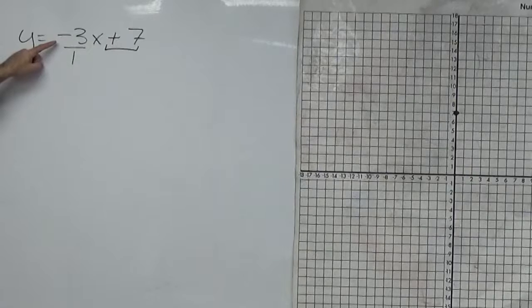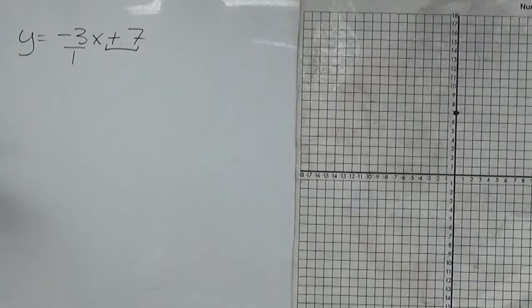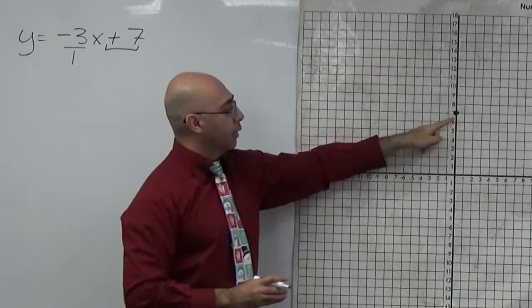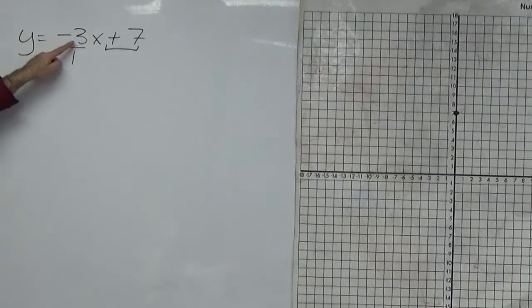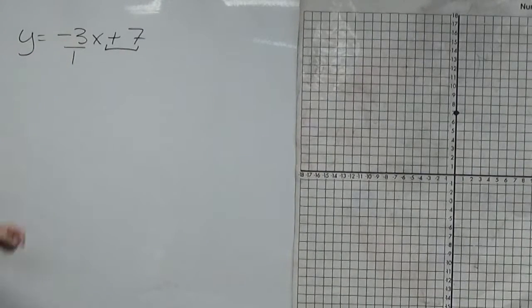So this means, this is the slope. This tells you how far up or down it's going. So which direction is this? It's going to go down. So from this point, it's going to go down. So how much is it going to go down by? Down 3, and then to the right 1.